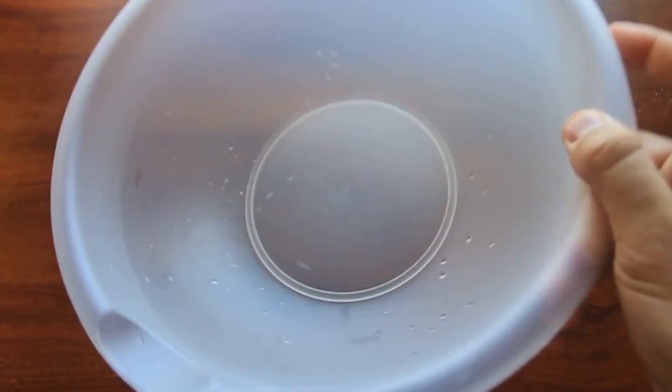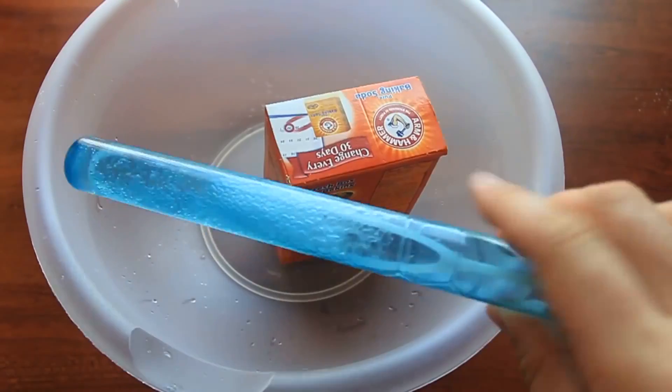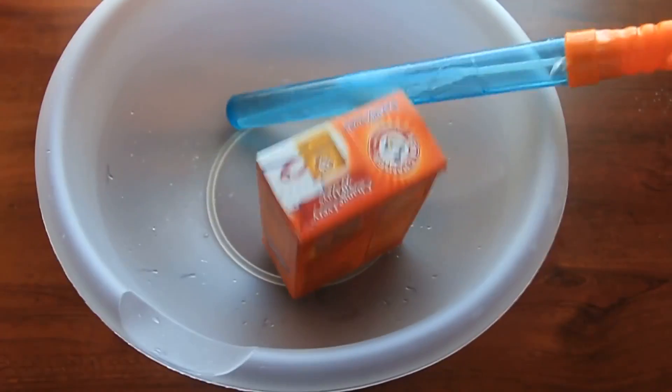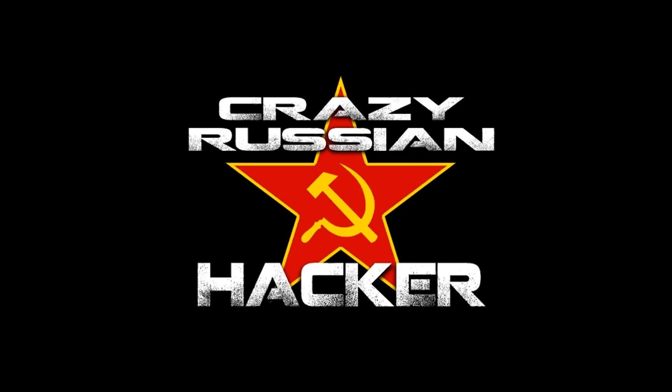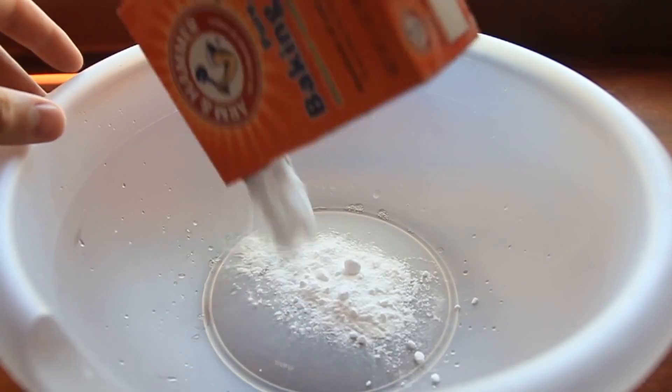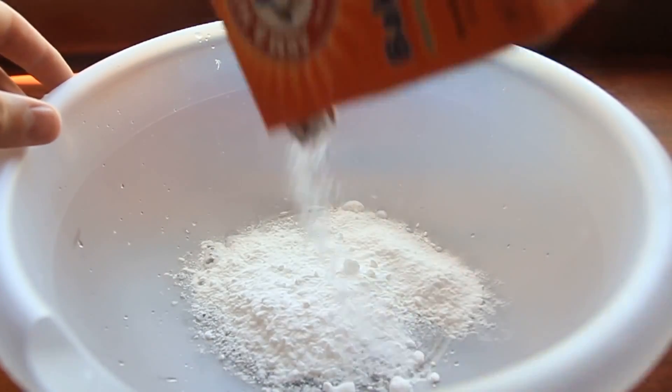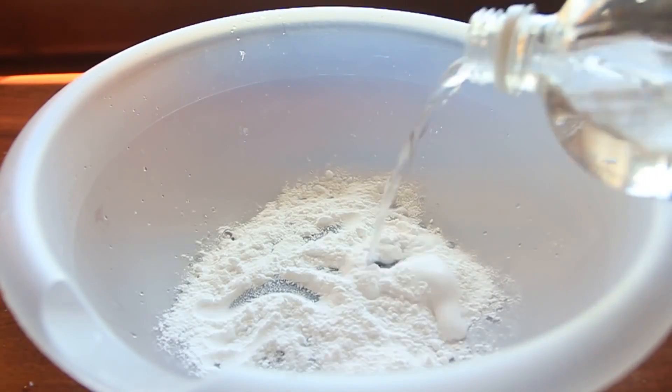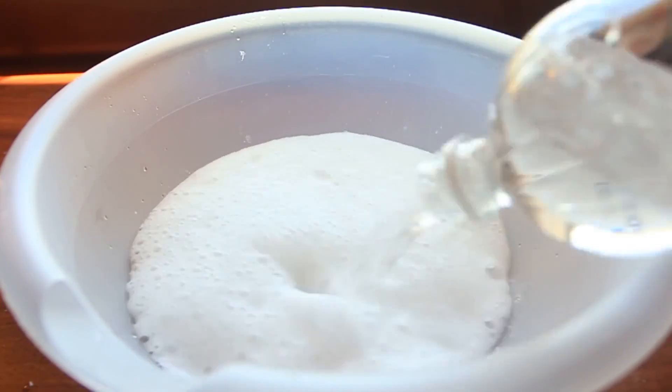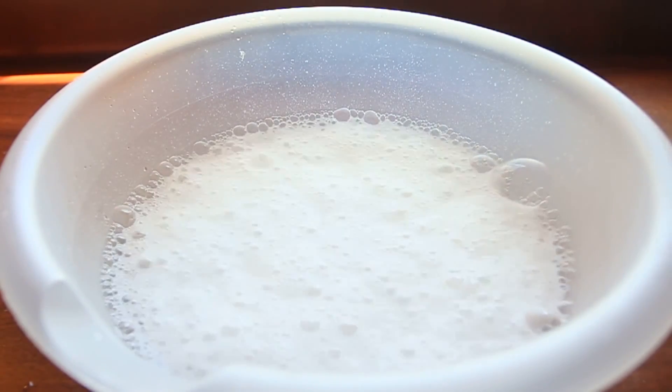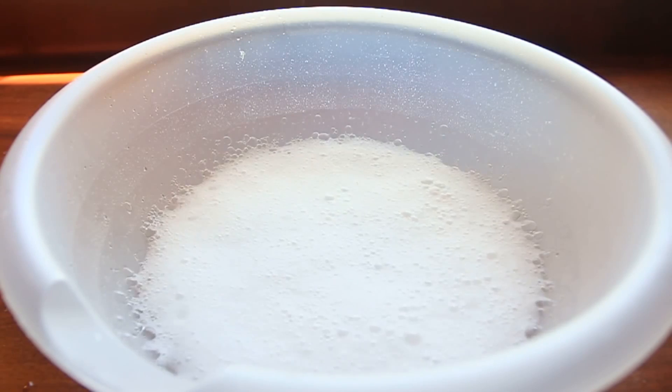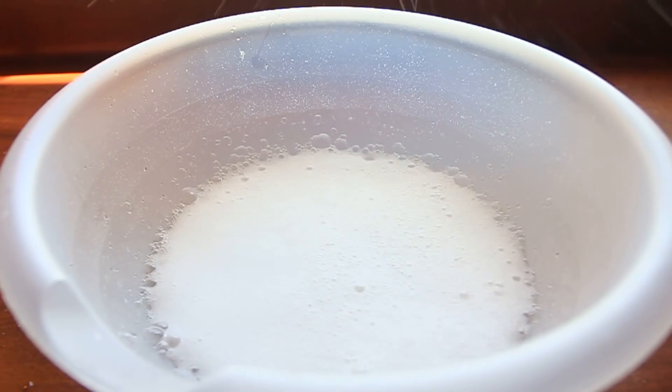For this experiment, we're going to need some kind of bowl, baking soda, soap bubble maker, and vinegar. Let's get to it. First thing we're going to do is pour a whole bunch of soda in a bucket. Then we're going to pour vinegar on top. And then while it's bubbling, we're going to make some bubbles.